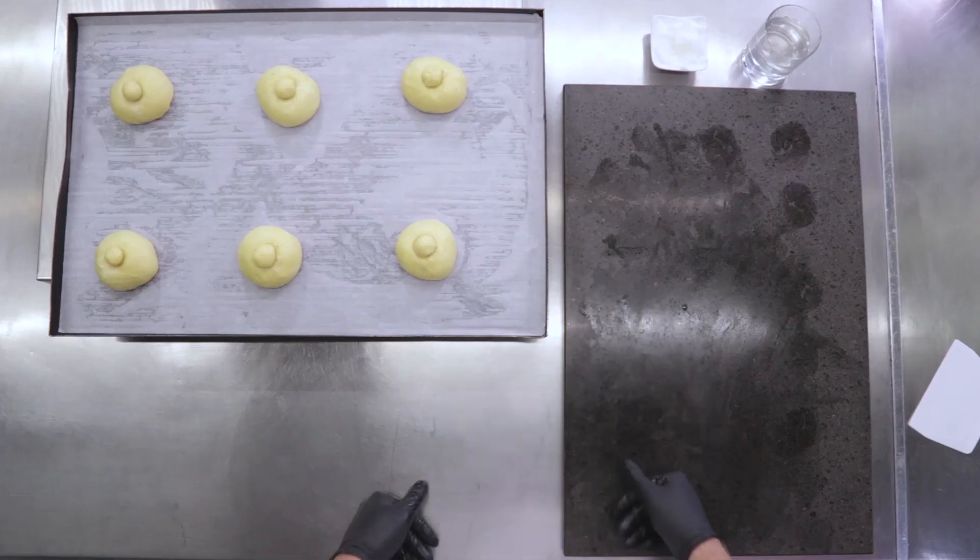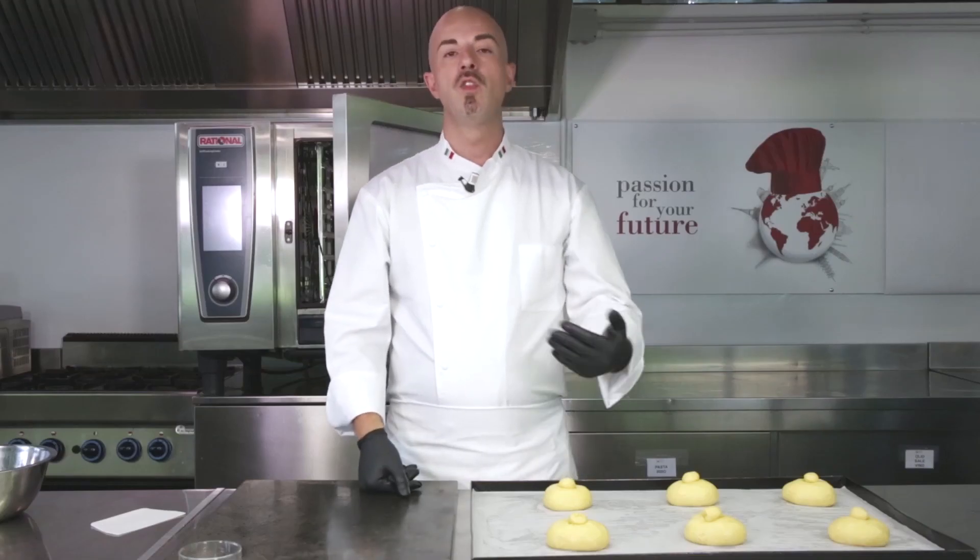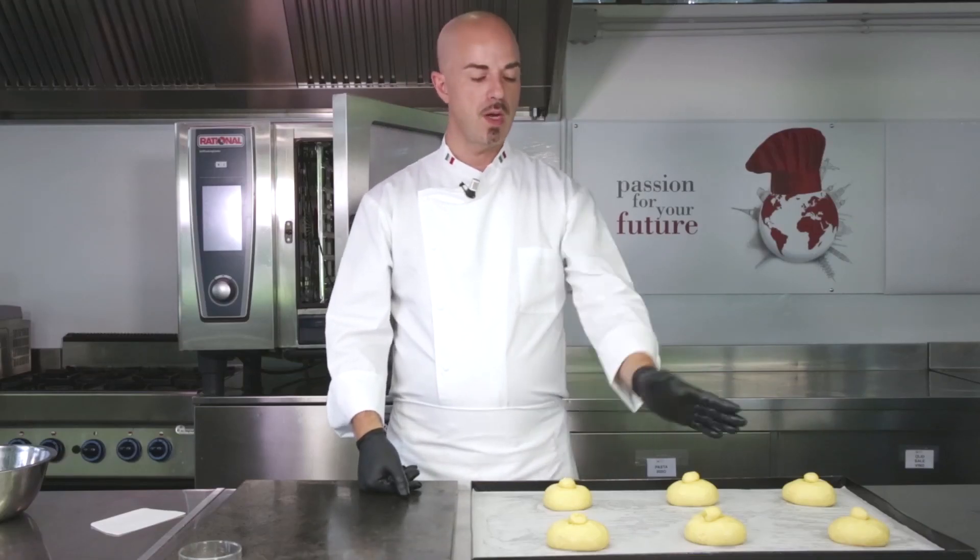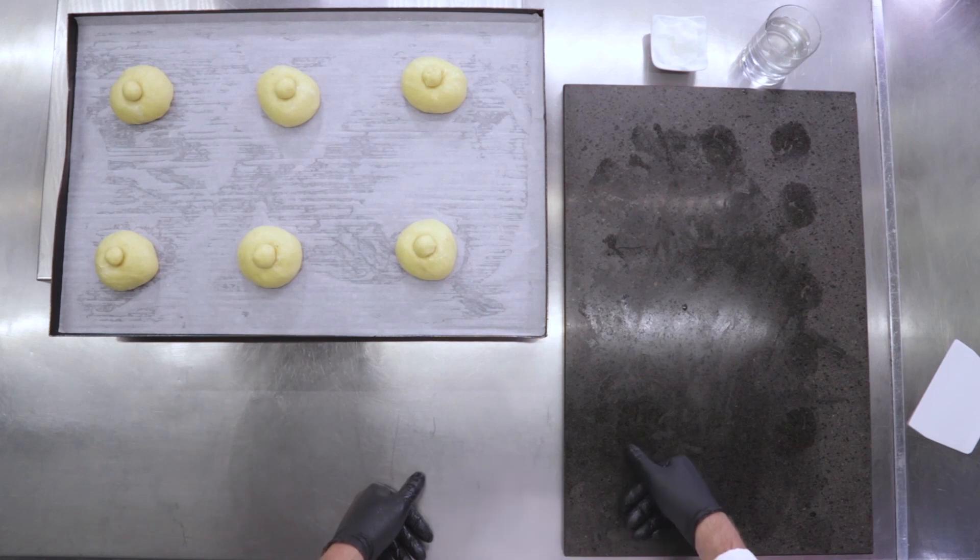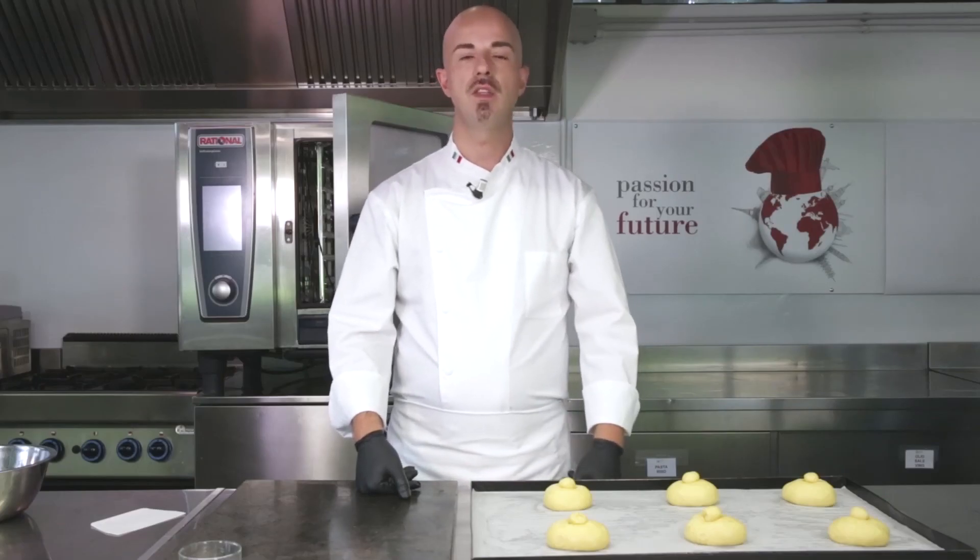After cooking you can improve the external structure by brushing with milk, eggs, or a mixture of the two. After you have brushed them, I'm going to cook them in the oven, 185 degrees for 20-25 minutes.